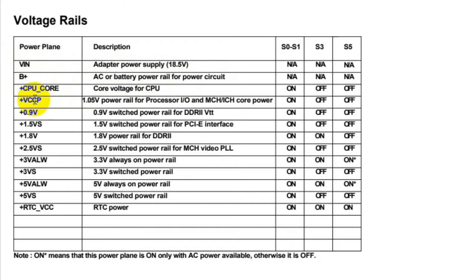Then we have the CPU core voltage. This is the main voltage for the CPU — central processing unit, or the processor. The CPU can contain many channels. We also have plus VCCP, which is always equal to 1.05 volts — the power rail for processor input/output and MCH.